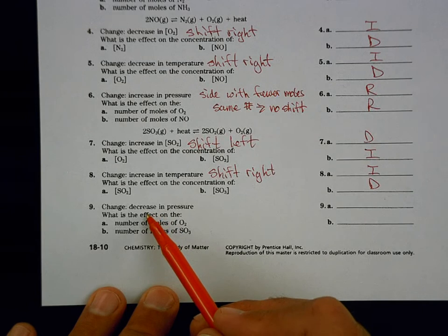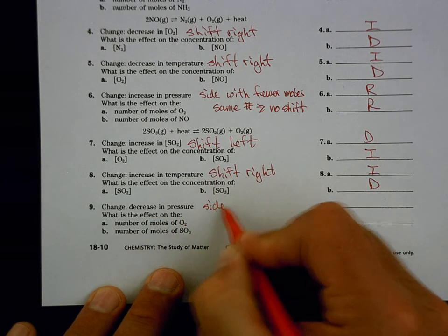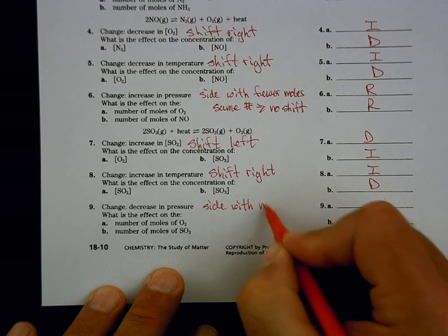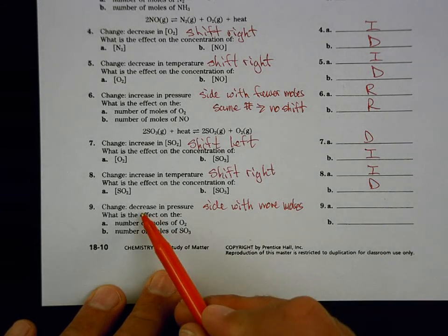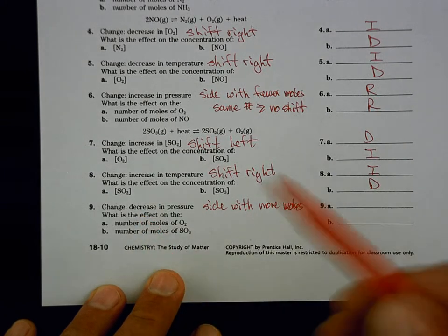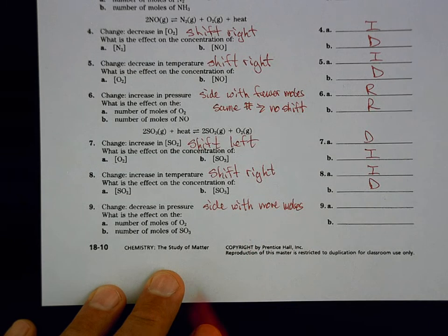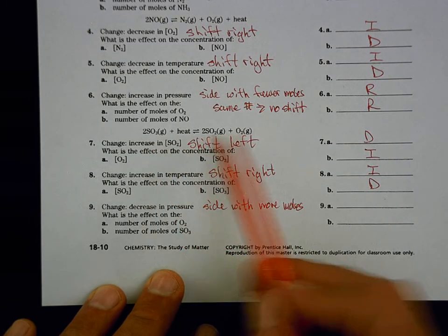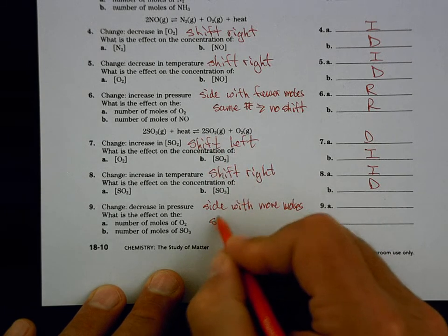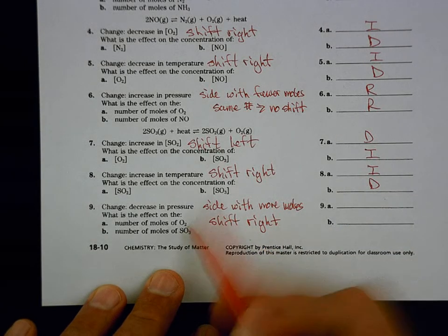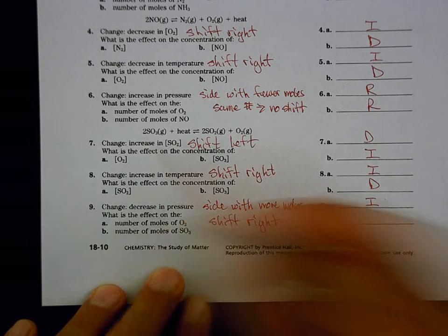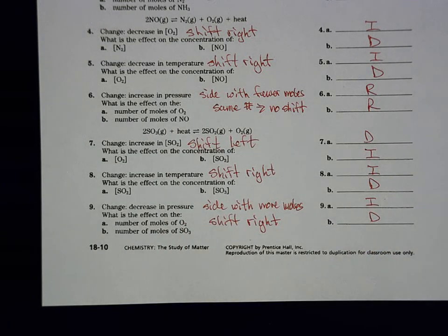Decrease in pressure: pressure is related to collisions, which is related to how many moles of gas we have. Since we have a decrease in pressure, we want to counter that with more collisions — more moles — so we go to the side with more moles. This side has two moles and the other has three (two plus one), so we shift right. O₂ is on the right so it increases; SO₃ on the left decreases.